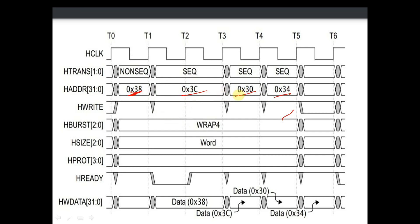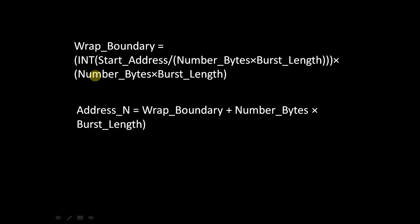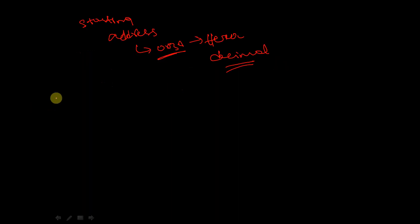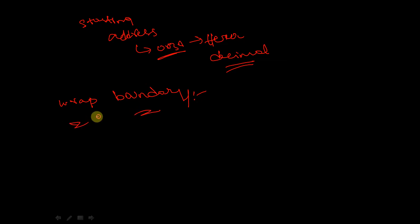The formula for wrap boundary is: int(start_address divided by number_of_bytes times burst_length) times number_of_bytes times burst_length. The wrap boundary is the initial address to which the address should be wrapped around — it is the address to which we should get back or wrap back to.